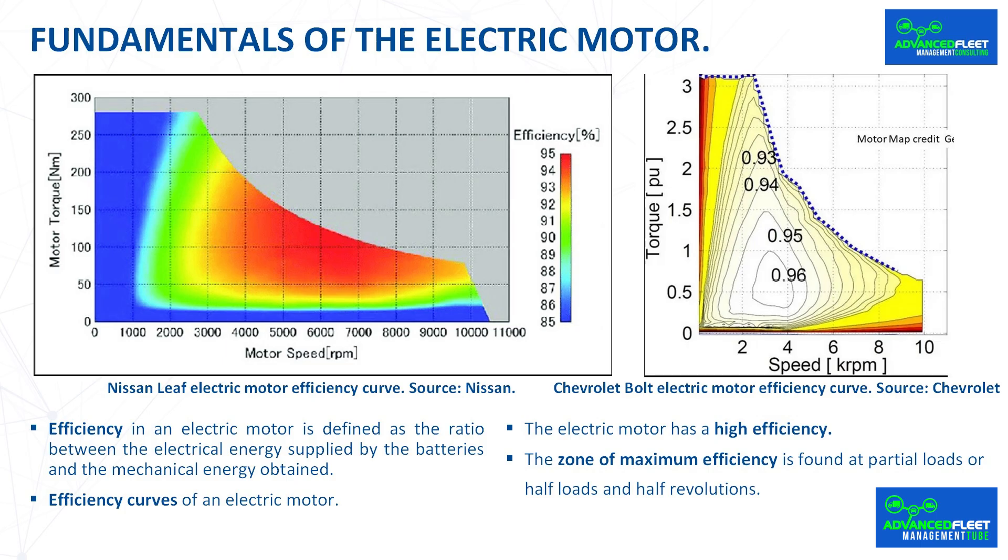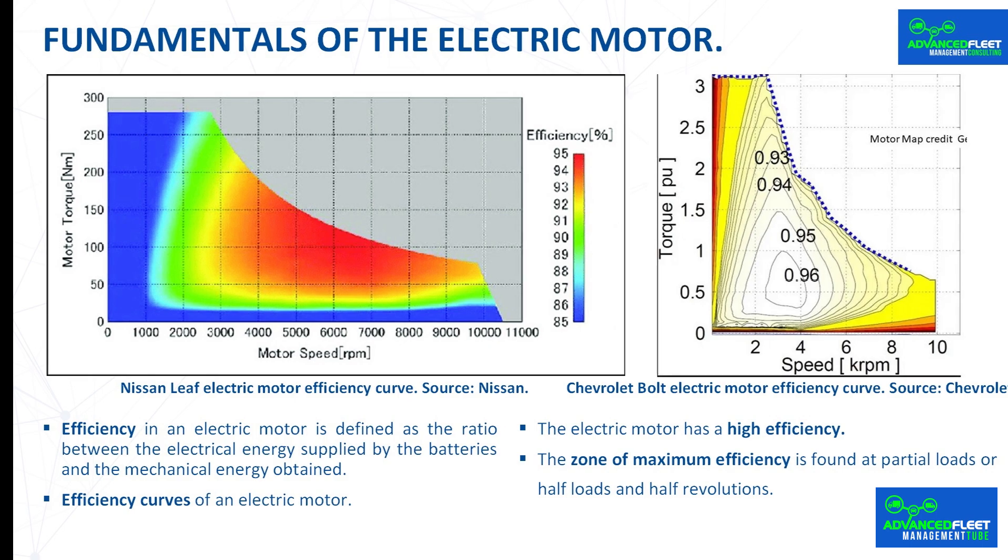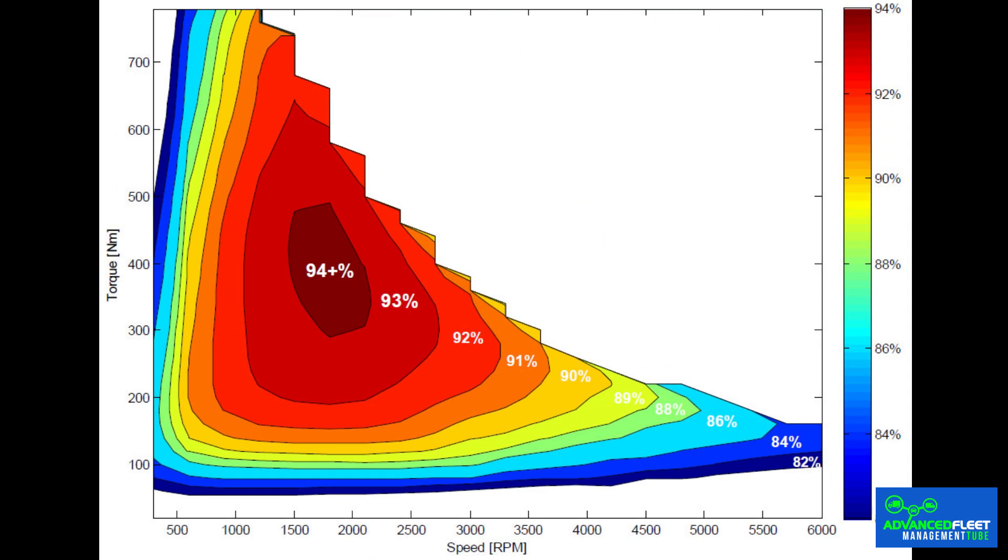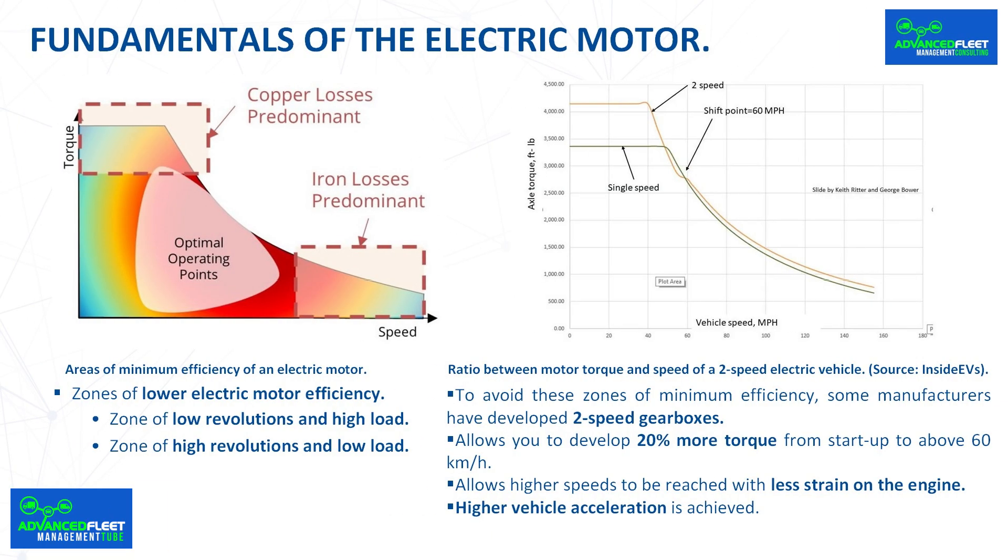The electric motor has a high efficiency. Whatever the torque and the revolutions at which it is located, it has at all times an efficiency equal to or greater than 85 percent, reaching 95 percent. The zone of maximum efficiency is found at partial loads or half loads and half revolutions, as the graphs show.